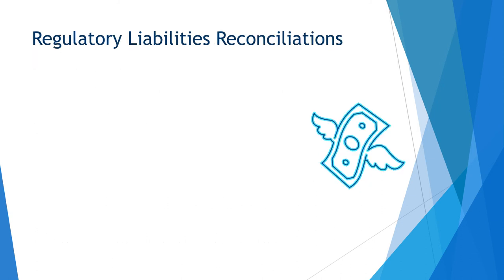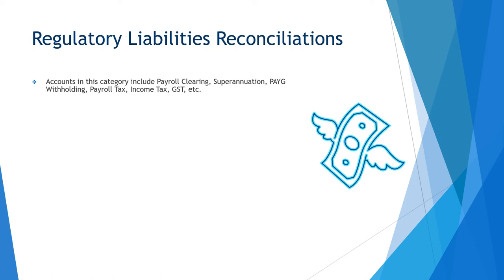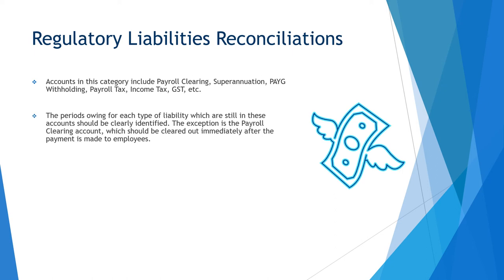Regulatory liabilities reconciliations cover accounts including payroll clearing, superannuation, PAYG withholding, payroll tax, income tax, GST, and so on. The periods owing for each type of liability which are still in these accounts should be clearly identified. The exception to this is the payroll clearing account, which should be cleared out immediately after payment is made to employees.